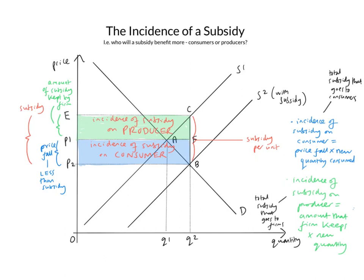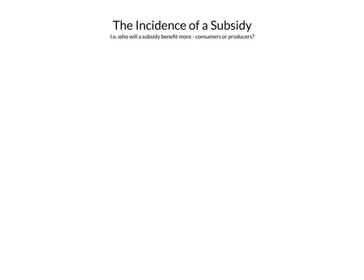The incidence of the subsidy on the producer is calculated in a similar way. We take the amount that the firm keeps, EP1, and multiply it by the new quantity OQ2, turning that into the rectangle EP1, F, C — and that gives us the incidence of the subsidy on the producer. The green rectangle on the top shows how much of the subsidy the producer keeps in total, and the lower rectangle shows how much the consumer keeps. In this case it's broadly equal because of the elasticities given, but there are lots of circumstances in which the incidence will not be the same, and governments will need to bear this in mind when they set taxes and subsidies.